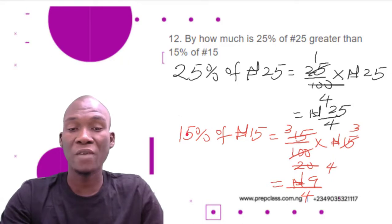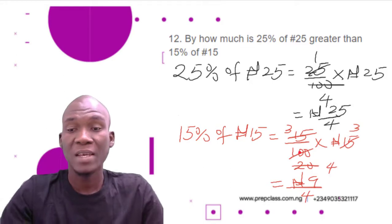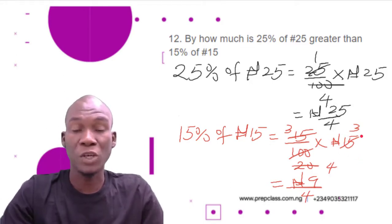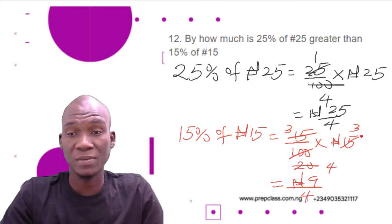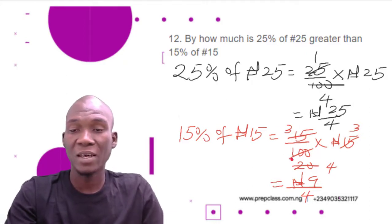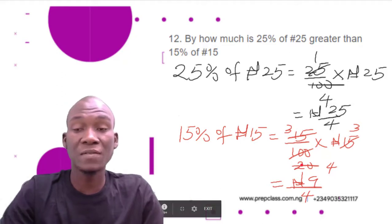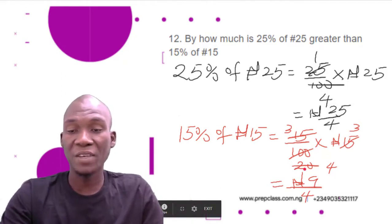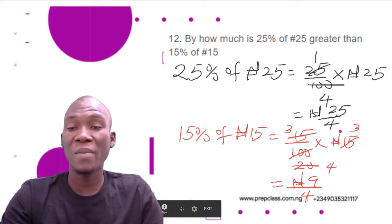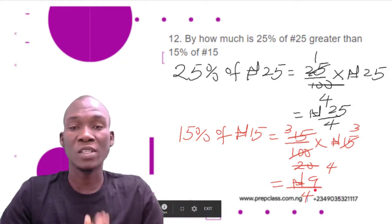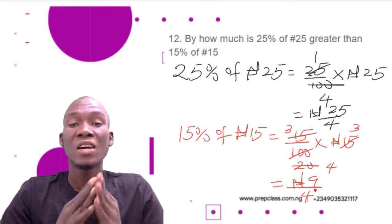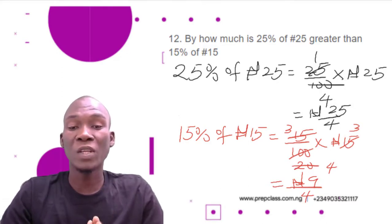Now for 15 percent of 15 naira: 15 percent equals 15 over 100, multiplied by 15 naira — because 'of' means times. Now, 5 into 15 is 3, 5 into 100 is 20, we can still divide: 5 into 20 is 4, 5 into 15 is 3, giving us 3 multiplied by 3 naira, which is 9 naira divided by 4. So we've found 25 percent of 25 naira is 25/4 naira, and 15 percent of 15 naira is 9/4 naira.